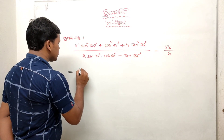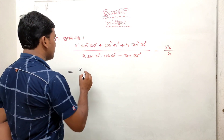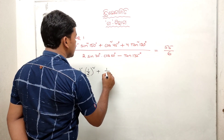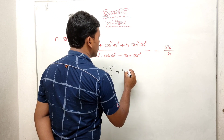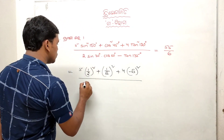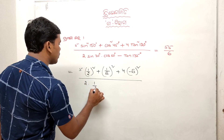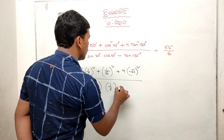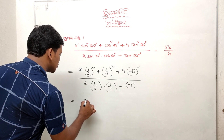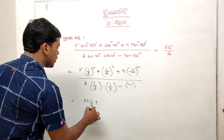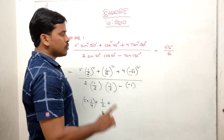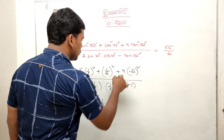Now evaluating: 5 sin squared 150 plus sin 150 equals 1 by 2, so whole squared is 1 by 4. Plus cos squared 45: cos 45 equals 1 by root 2, whole squared is 1 by 2. Plus 4 tan squared 120: tan 120 equals minus root 3, whole squared is 3. Whole expression divided by 2 into sin 30 into cos 60, minus tan 135. Sin 30 equals 1 by 2, cos 60 equals 1 by 2, tan 135 equals minus 1. So: 5 into 1 by 4, plus 1 by 2, plus minus root 3 whole squared equals 3, times 4 equals 12.